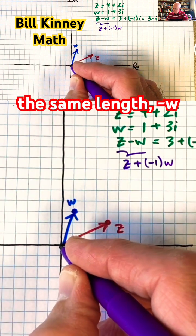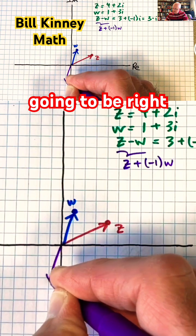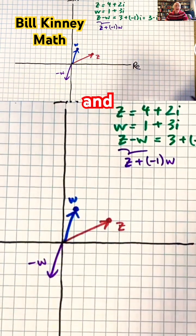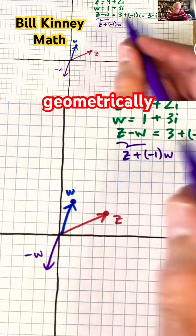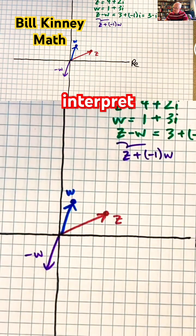Negative w is going to be right there. And then I can use the parallelogram law that we learned about in video number 4 to geometrically interpret z minus w as z plus negative 1 times w.